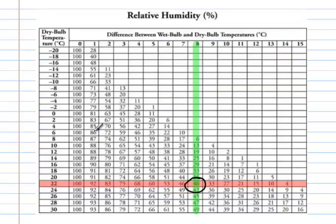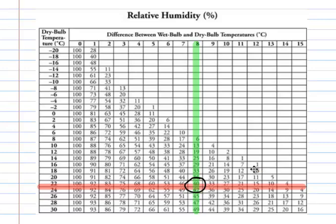Now you may have had data that was an odd number. This table only uses even numbers on the side, so do the best that you can. If you'd like, you can assume that your number is going to be somewhere in between. For example, if you had 23 degrees, your number would be somewhere between 40 and 42%, so you could estimate it to be 41%. Just do the best you can.